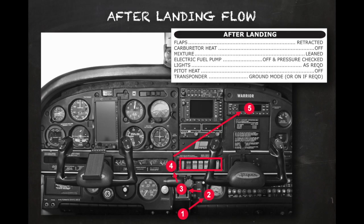Once the aircraft is clear of the runway and across the runway hold-short markings, it should be brought to a complete stop and the after-landing flow performed. The after-landing flow is identical to the before-takeoff flow. Number one: flaps are retracted and visually verified. Number two: carburetor heat is ensured to be in the off position. Number three: the mixture is leaned to avoid spark plug fouling. Number four: electric fuel pump off, pressure checked. And for daylight operations, landing lights off and wingtip strobe lights off. The last item is to check the status of the transponder.